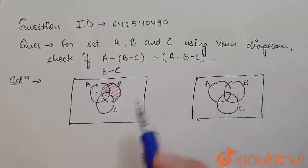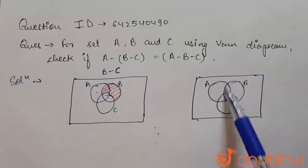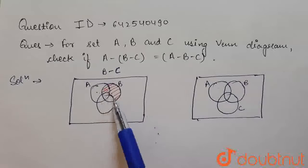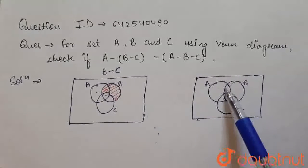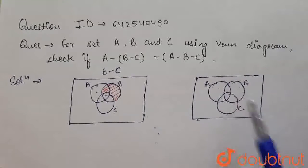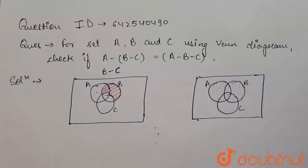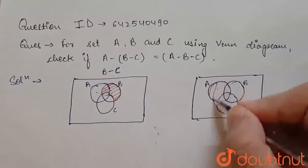Now, what we have to do from A - this is A - I have to subtract this part. This part we have to subtract. So, what is left to us in A? The leftover part is this.